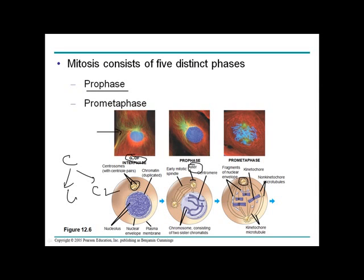The microtubules produced are arranged into fibers showing rapid dynamic instability, with positive ends and negative ends. They are constantly growing and shrinking, and through this dynamic process they will eventually make contact with the centromere region of the chromosomes.